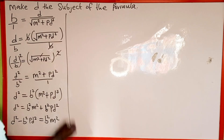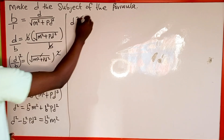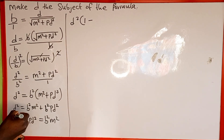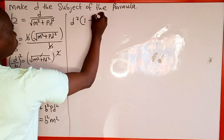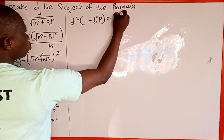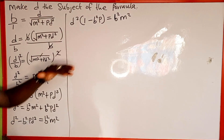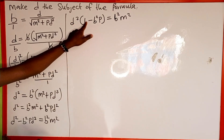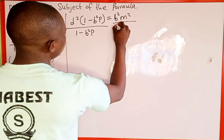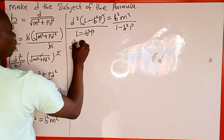Looking at the left hand side, d squared is common in both terms, so we factor out d squared. Inside the bracket we have d squared over d squared which is 1, minus b squared p d squared over d squared which gives b squared p. So the left hand side becomes d squared times the bracket 1 minus b squared p, equal to b squared m squared.